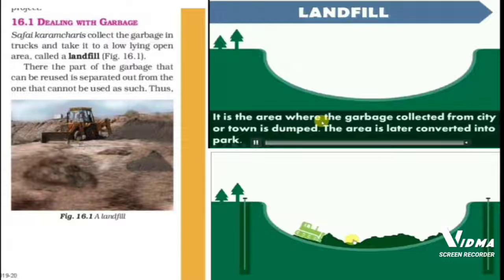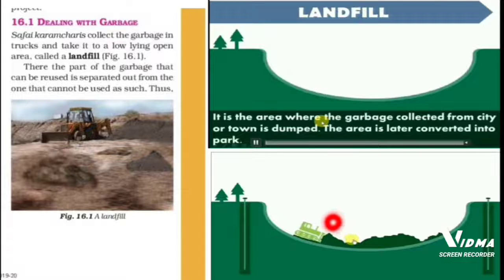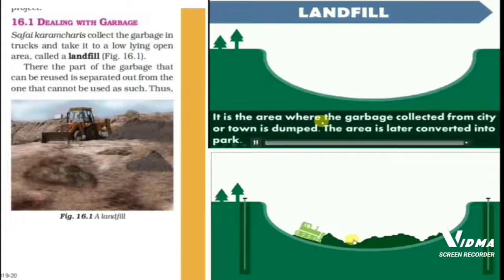But before dumping, a process of separation is done in which useful and non-useful components are separated. Useful materials that can be recycled are separated out. Non-useful biodegradable waste that cannot be recycled is dumped into the low-land area. It is compressed with the help of a bulldozer, and more garbage is added until the area is filled. After that, the soil is leveled over it and the area is changed into a park.